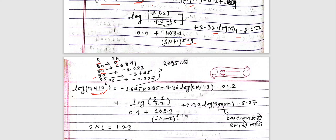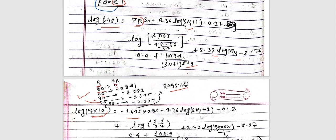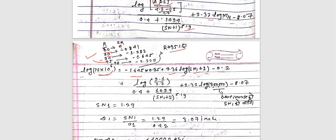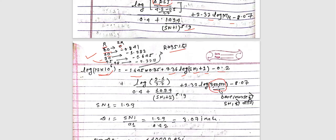Using 9.36·log(SN1+1) − 0.2, with ΔPSI = 2.1, numerator 4.2−1.5 = 2.7, and denominator 0.4 + 1095/(SN1+1)^5.19, and 2.32·log(MR) − 8.07. Solving: SN1 = approximately 2.3 to 2.4.